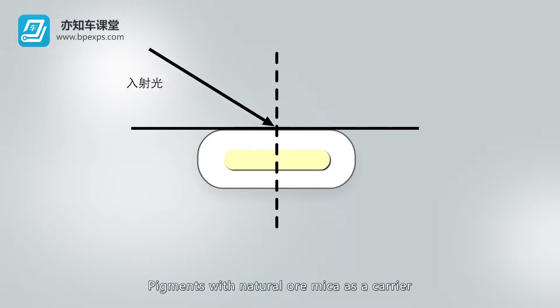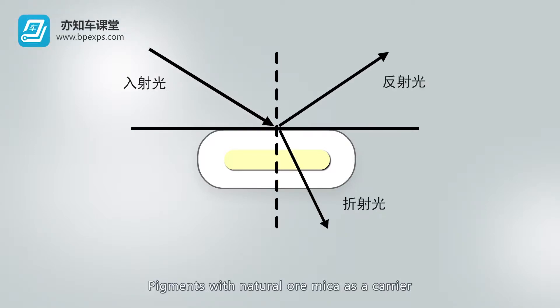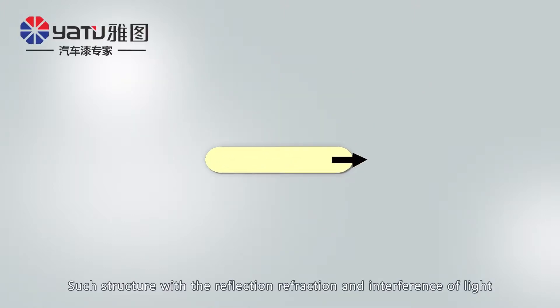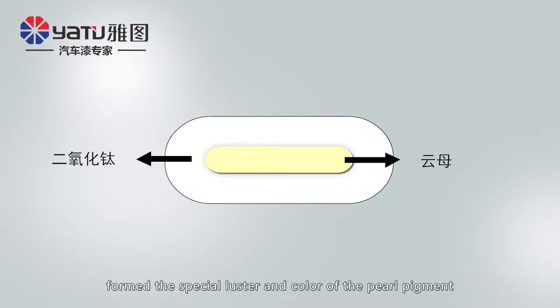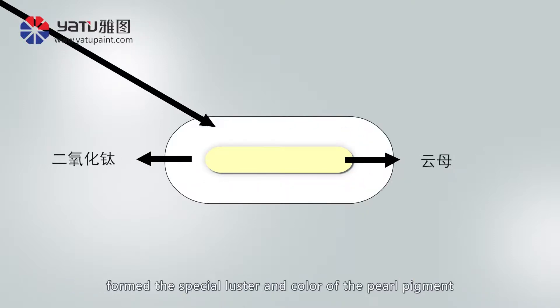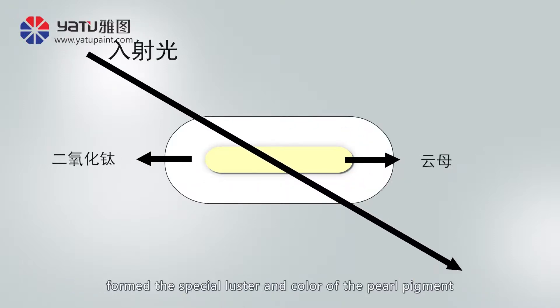Pigments with natural ore mica as a carrier are coated with other substances on their surface. Such structure, with the reflection, refraction, and interference of light, forms the special luster and color of the pearl pigment.